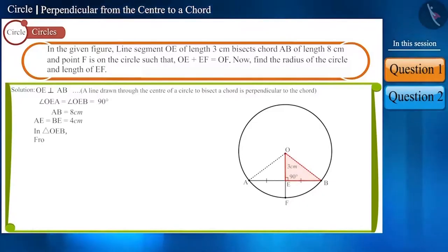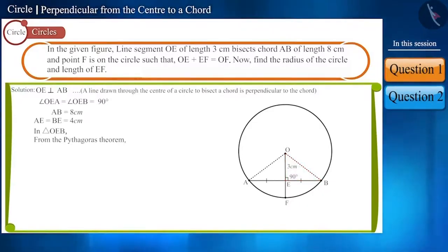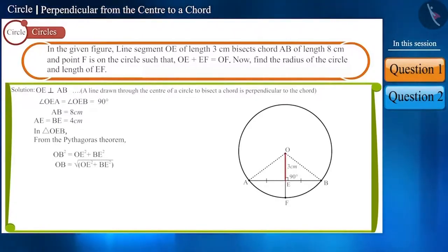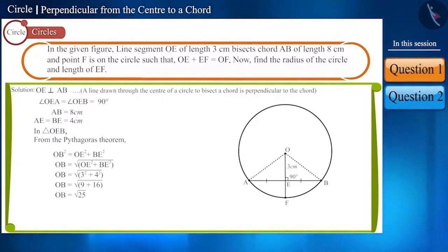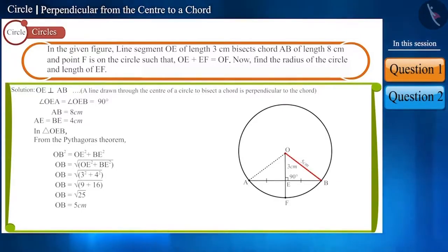Using the Pythagoras theorem in triangle OEB, we can write it in this way. We know the lengths of OE and BE. On simplifying it, we get the length of OB as 5 cm. In this way, we found the radius of the circle.